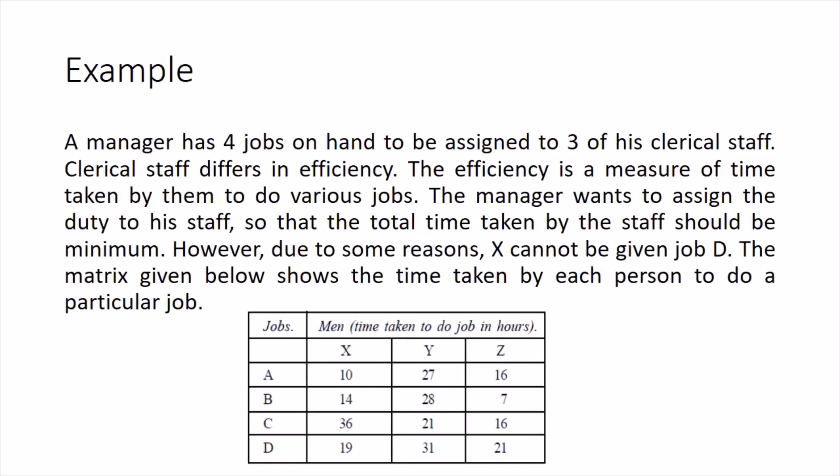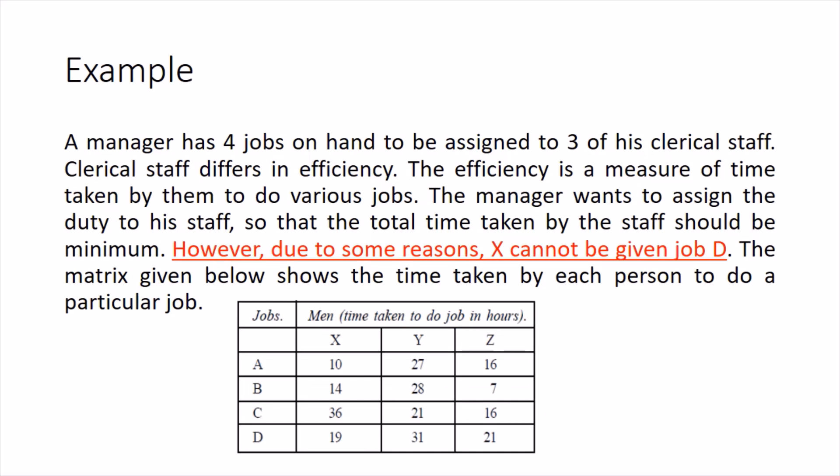Now let's talk about another exceptional case: what if additional restrictions are given? I'll explain this with a new example. A manager has four jobs A, B, C, D and three men X, Y, Z to do those jobs. The data represents the time taken, so the sense of optimization is minimization. The additional restriction given is that due to some reasons, X cannot be given job D. We don't need the reasons, but we need to impose this restriction into the system.